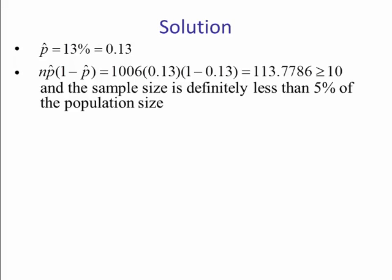And the sample size is definitely less than 5% of the population size, because we're talking about all American adults. Alpha is 0.05 because we are doing a 95% confidence interval. So Z alpha over 2 becomes Z 0.025, 2.5%, which we look on table 5 and we see that value is 1.96.